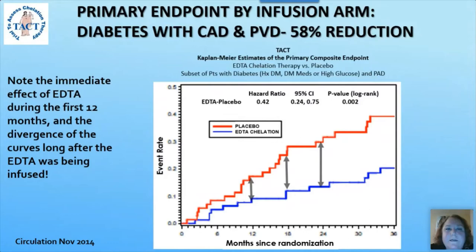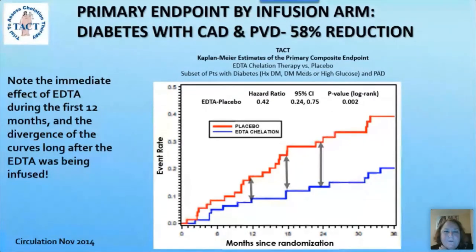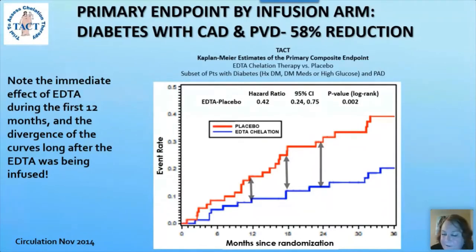Back to TACT1: patients with both coronary disease and peripheral vascular disease showed a 58% reduction in events — the sicker they were, the wider the curve diverged and the faster it differentiated. That's pretty impressive for a cheap generic medication.